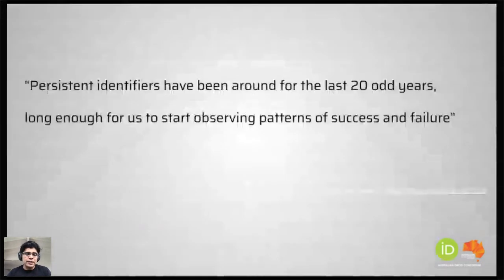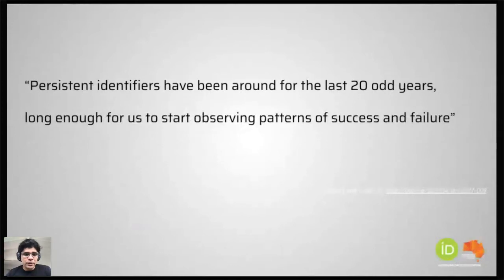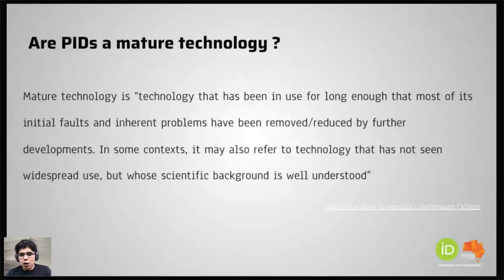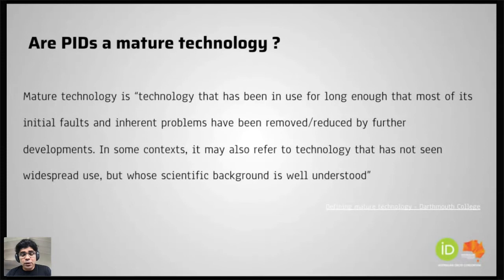Persistent identifiers have been around for the last 20-odd years in different shapes and forms, and that's about long enough for us to actually start observing patterns of success or failure. When you talk about maturity, a mature technology is one that is either in use for a long enough time that it doesn't have early teething problems, or that if it did have them, they have been reduced by further developments. Or it might not necessarily have been around for a long time, but it's very well understood by the community that's using it, so it could also be mature in that way.